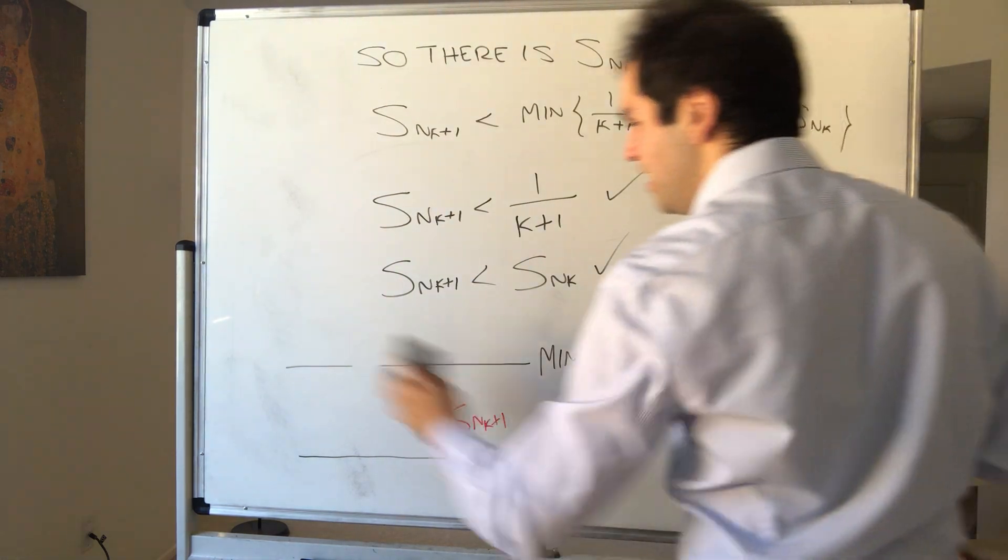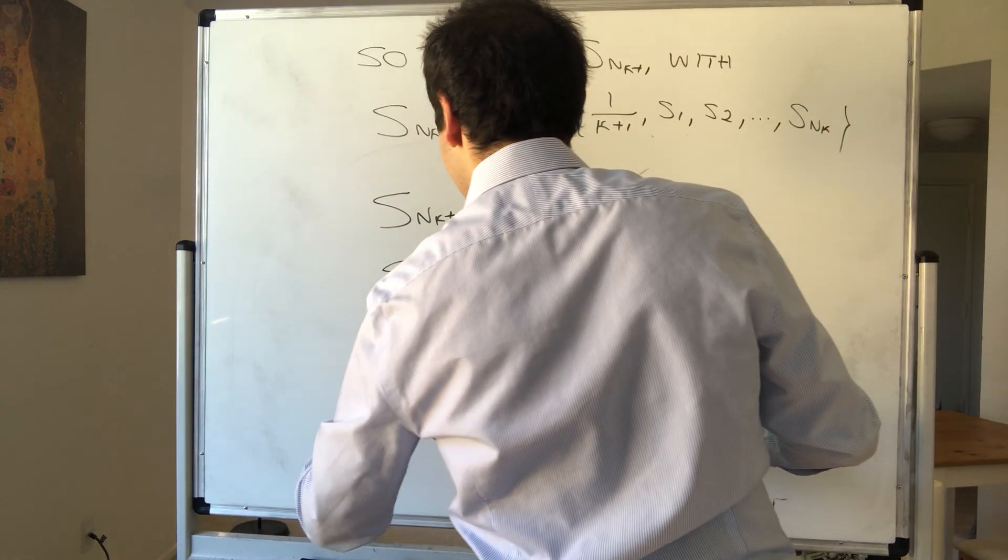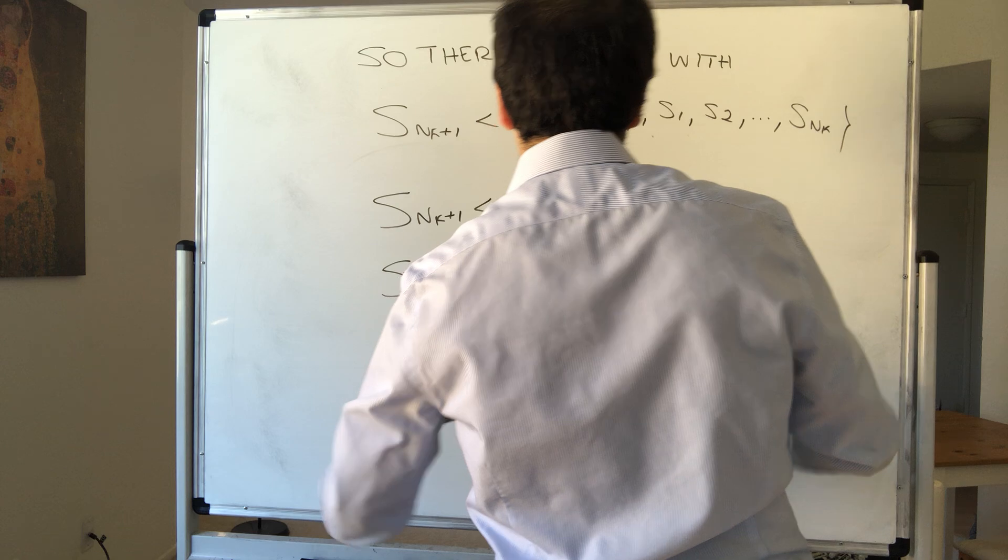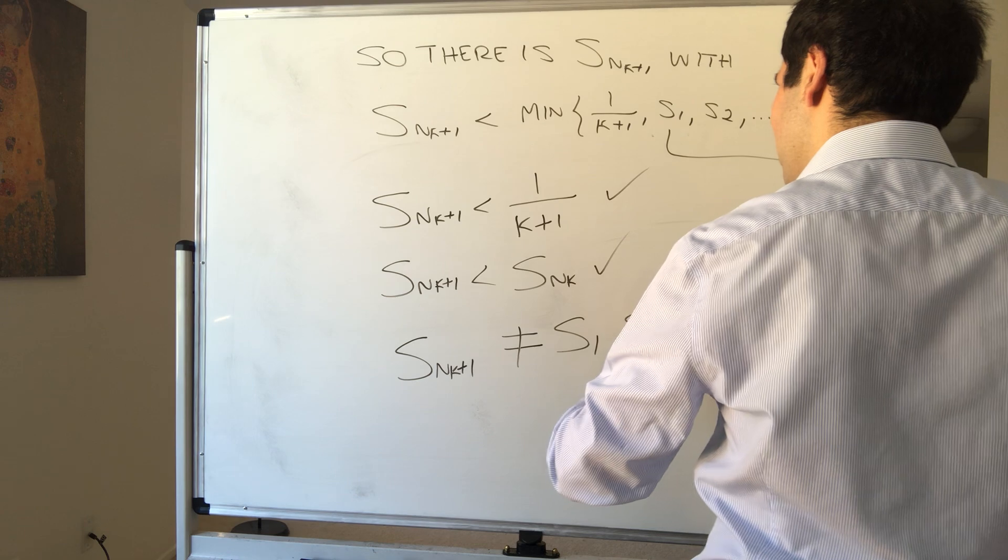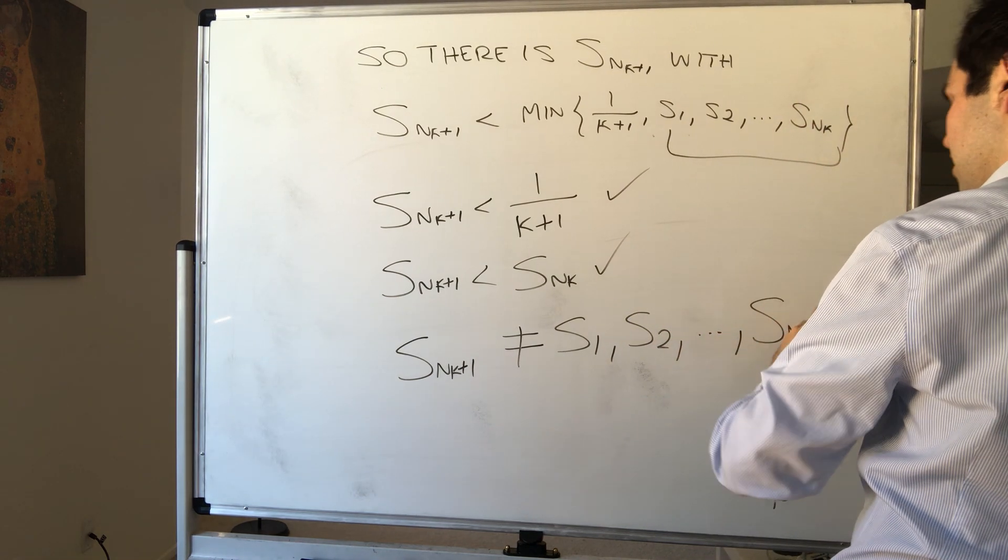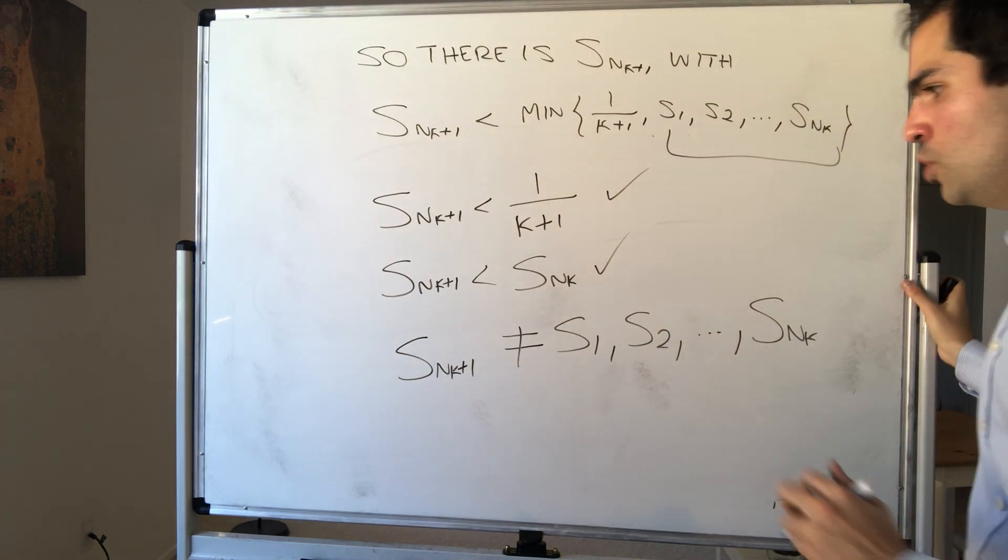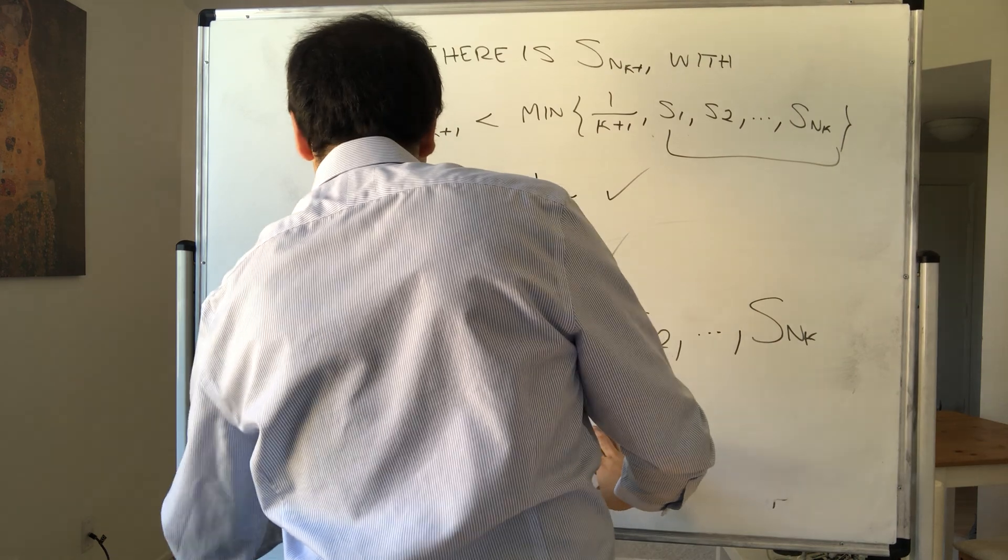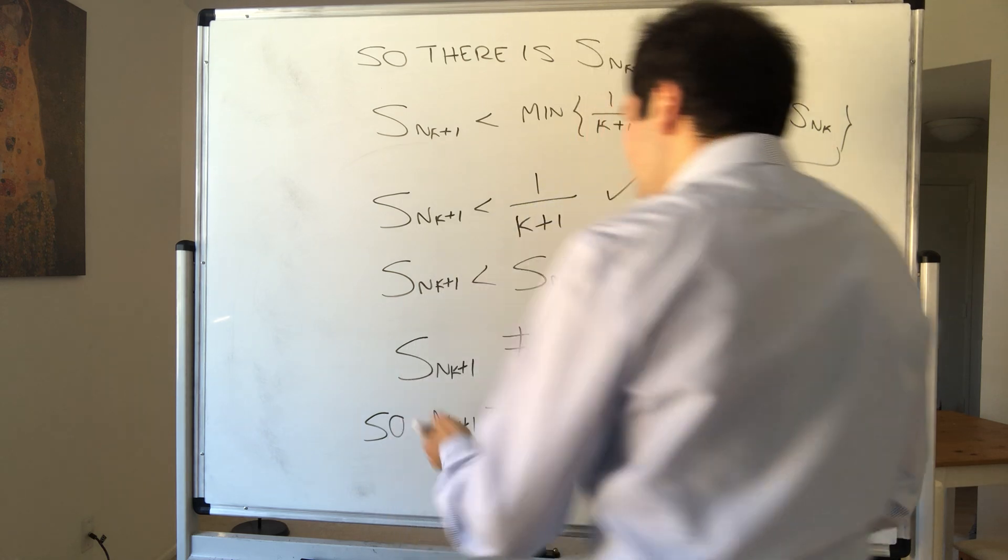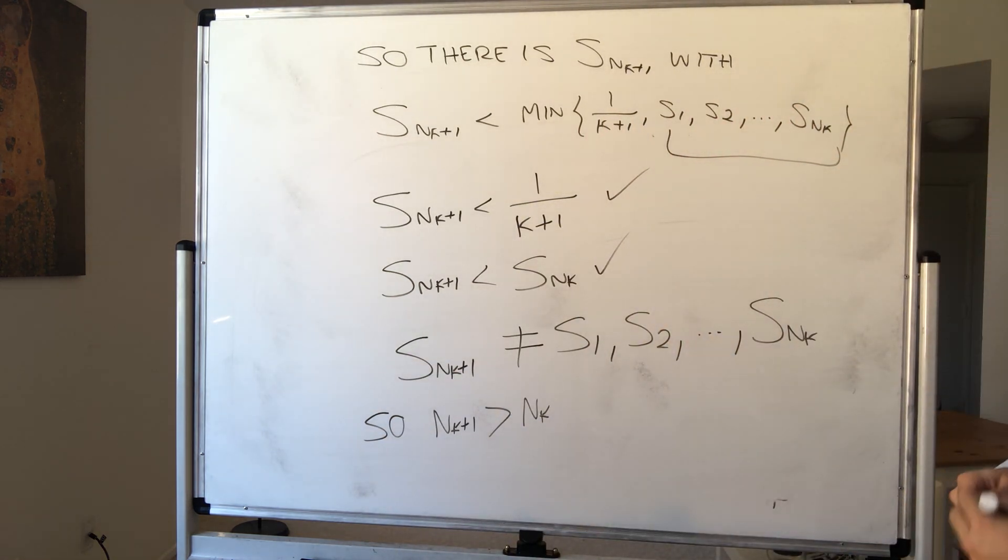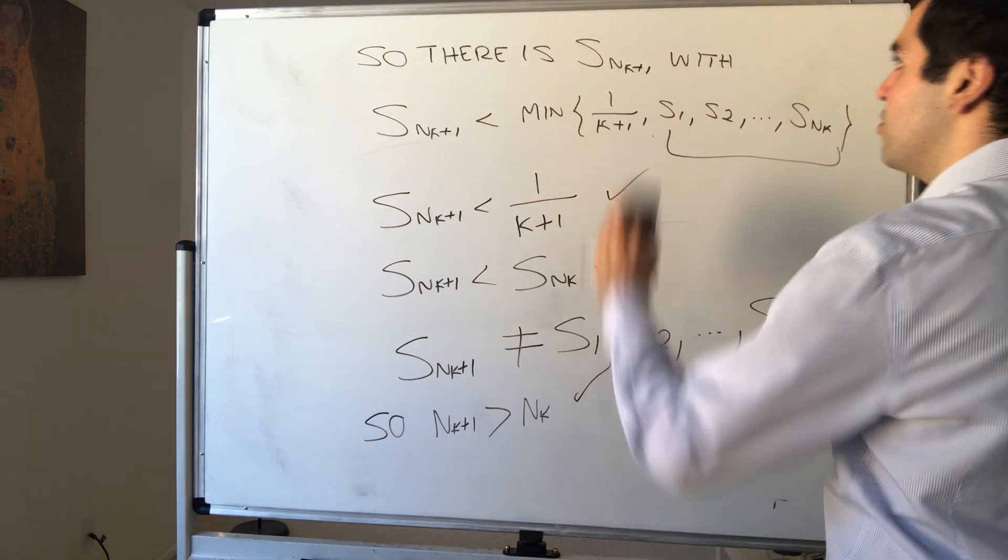And last but not least, you see, because Snk plus 1 is less than all those values, it has to be different. It's different from S1, S2, up to Snk. So it's really a new city that you haven't seen before, so it must be a new stop. So Nk plus 1 comes really after Nk. Otherwise, it would have been a stop that you've seen before. And therefore, what have we found? We found a decreasing subsequence.